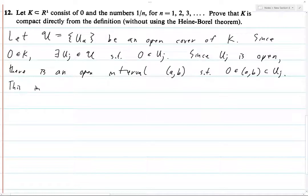Okay, this implies that the right endpoint B must be strictly greater than 0, because otherwise 0 could not be contained at this interval. So then there is some natural number, capital N, such that B is between 1 over N and 1 over N plus 1.